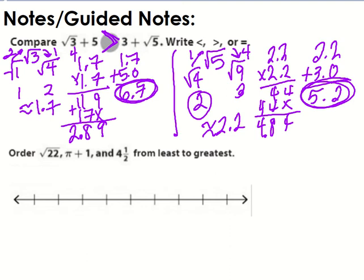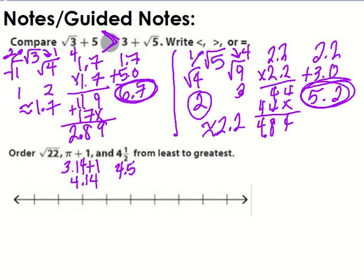Down below, we're going to put real numbers in order from least to greatest on a number line that's left blank so we can scale it to fit our numbers. Because we have two irrational numbers and one rational number, we compare them in decimal form. Four and a half as a decimal is 4.5. Pi plus one — we always estimate pi as 3.14 — so pi plus one gives us 4.14.